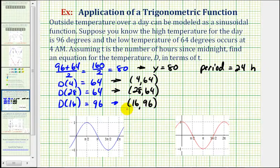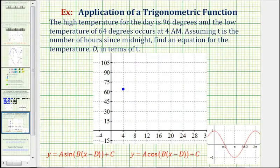So let's go ahead and plot this information on the coordinate plane and then determine a possible sinusoidal function. Let's first plot the three points. The first point plotted here was the point (4, 64). And then we said it also contains the point (28, 64), which should be here. Then the high point is the point (16, 96).